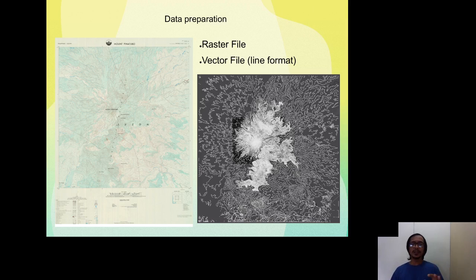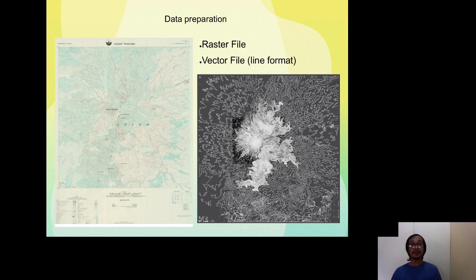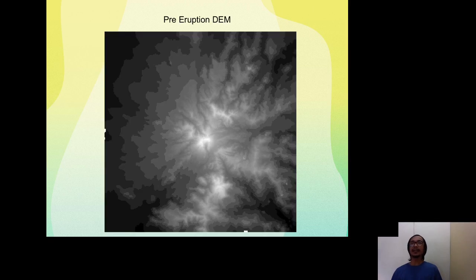For data preparation, the left image shows the old topo map as a raster file. After scanning, it needed to be converted to a vector file, so I digitized it both manually and using the raster-to-vector plugin to help digitize features of the map. After digitizing and inputting all the elevation data for every contour line, I was able to produce the pre-eruption DEM. At the center of the map, that's the original Mount Pinatubo with a highest elevation of 1,745 meters.